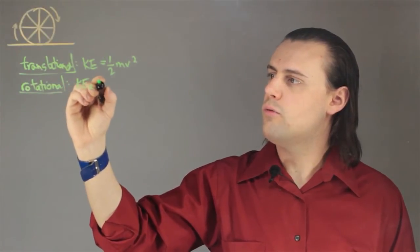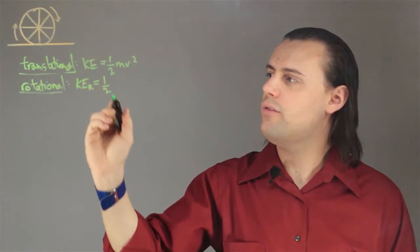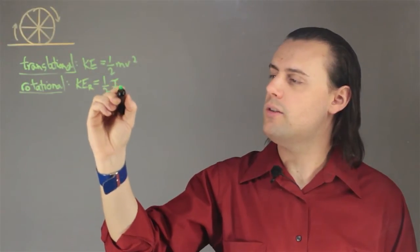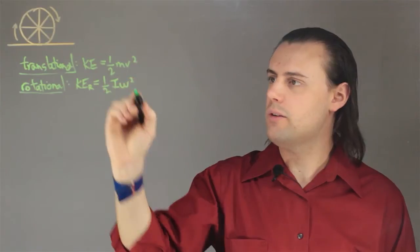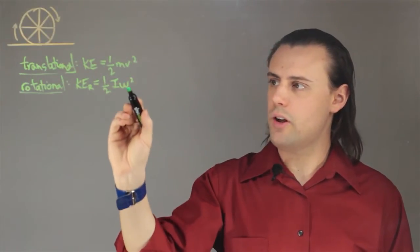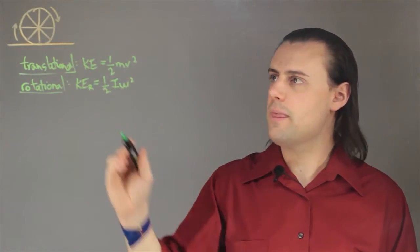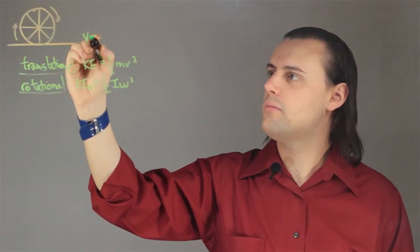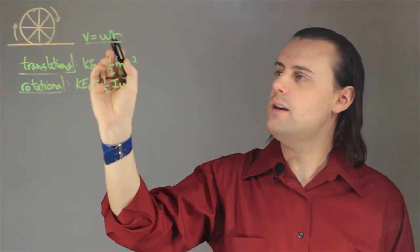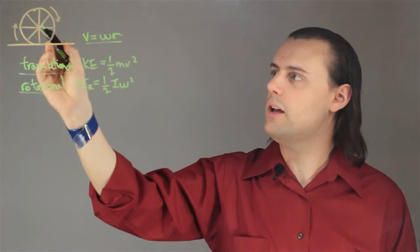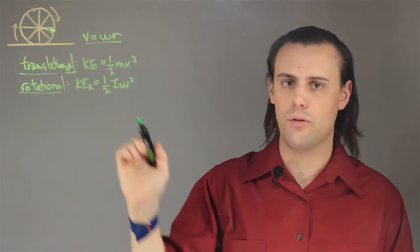There's also the rotational kinetic energy, one half times the moment of inertia times the angular velocity squared. Now the linear velocity and the angular velocity are related in this fashion where v is equal to omega times r, and r is the radius of the wheel.